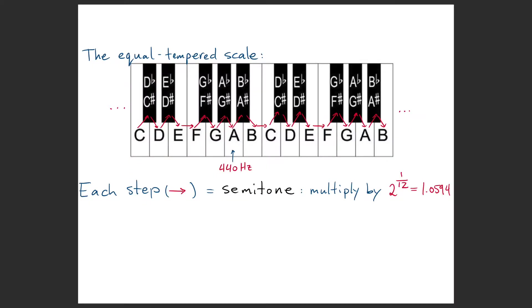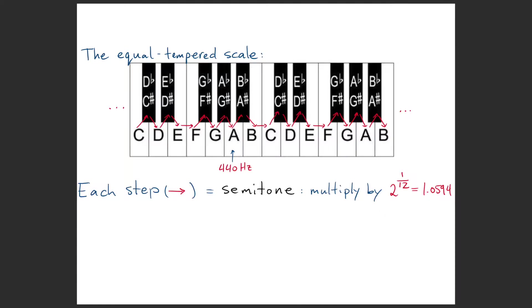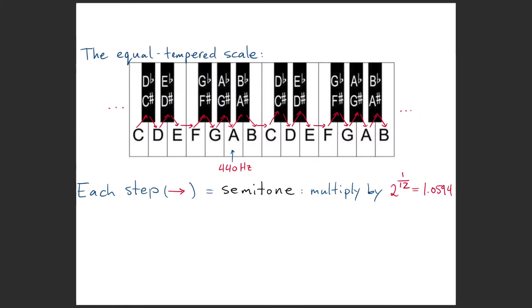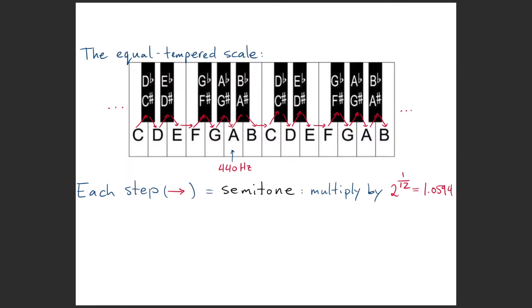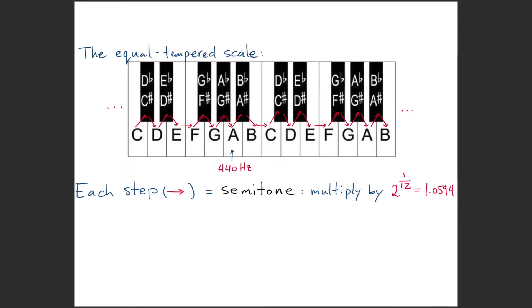To define the frequencies for all these notes, you start with one specific frequency. This is just a convention, there's nothing particularly special about it, but we choose 440 Hertz as the frequency of one of the A's, the A above middle C on our piano.